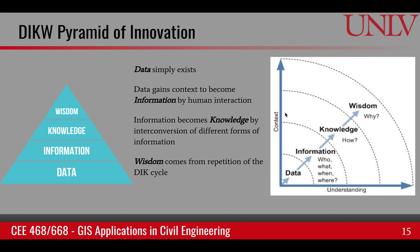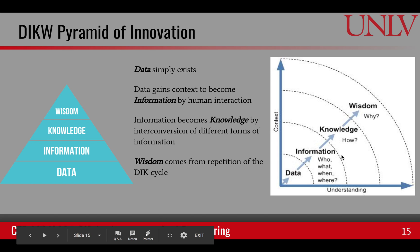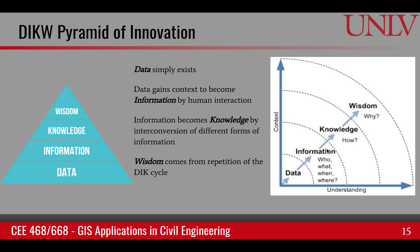In the context of GIS, we are gathering facts and figures from all over the world in the form of maps and sensor data. GIS creates a system of information that can be used to do analysis, which increases our knowledge, and even increases wisdom where we create policies and processes that help us better interact with our environment and space.